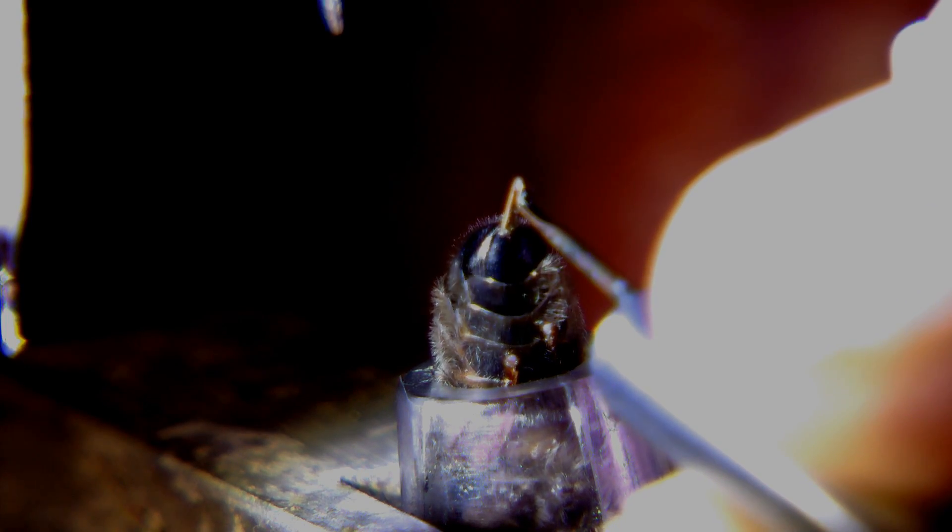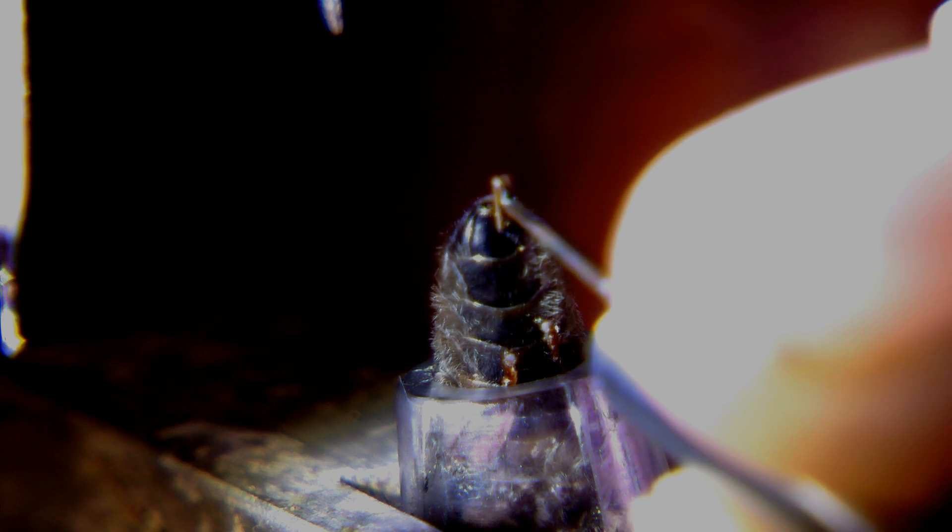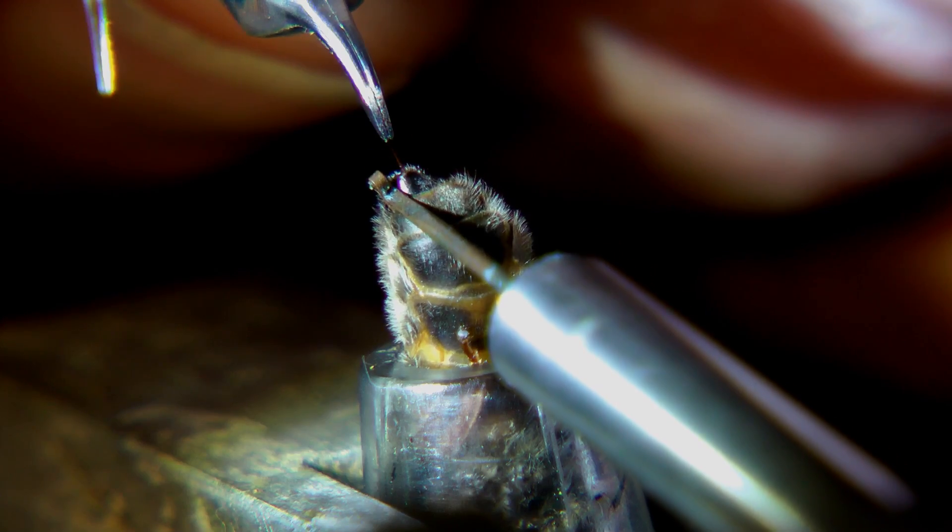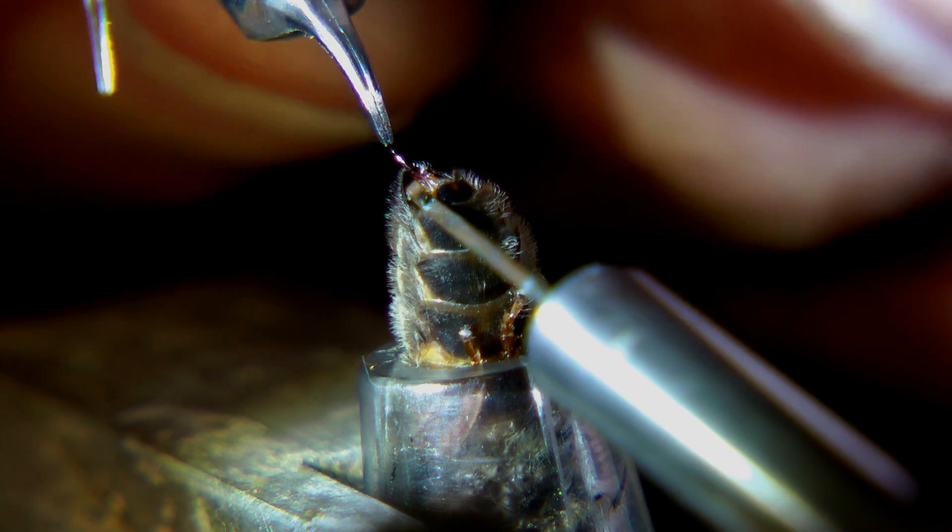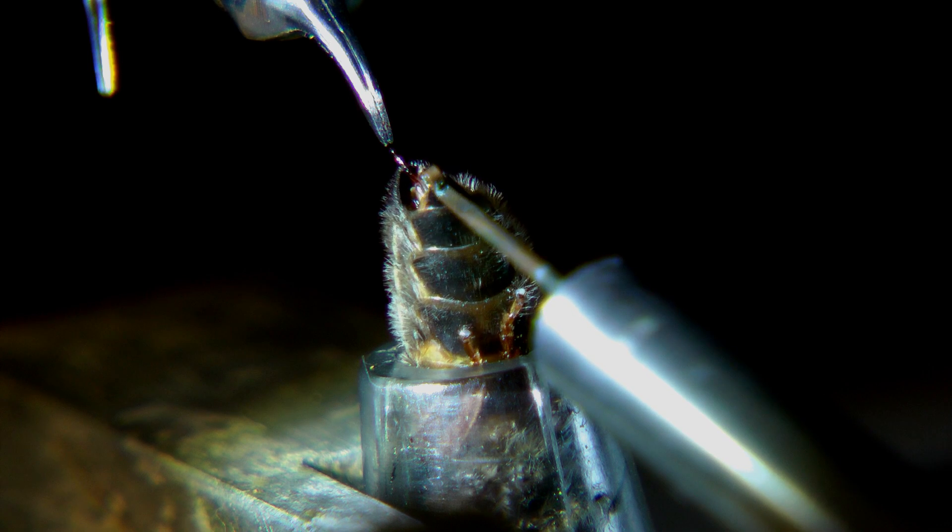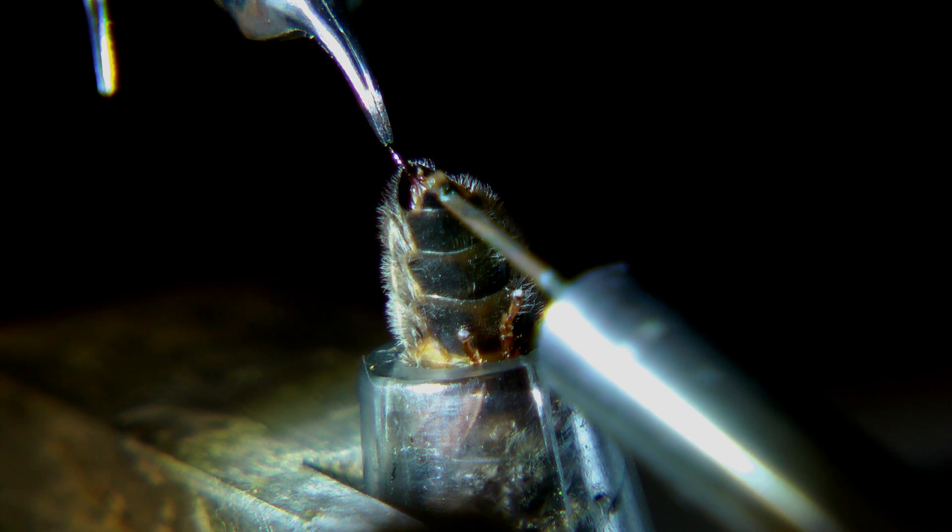Bill starts as soon as the queen is subdued enough to minimize the time the queen is subjected to the gas. Bill grasps the stinger with the forceps and together with the hook exposes her vaginal orifice.